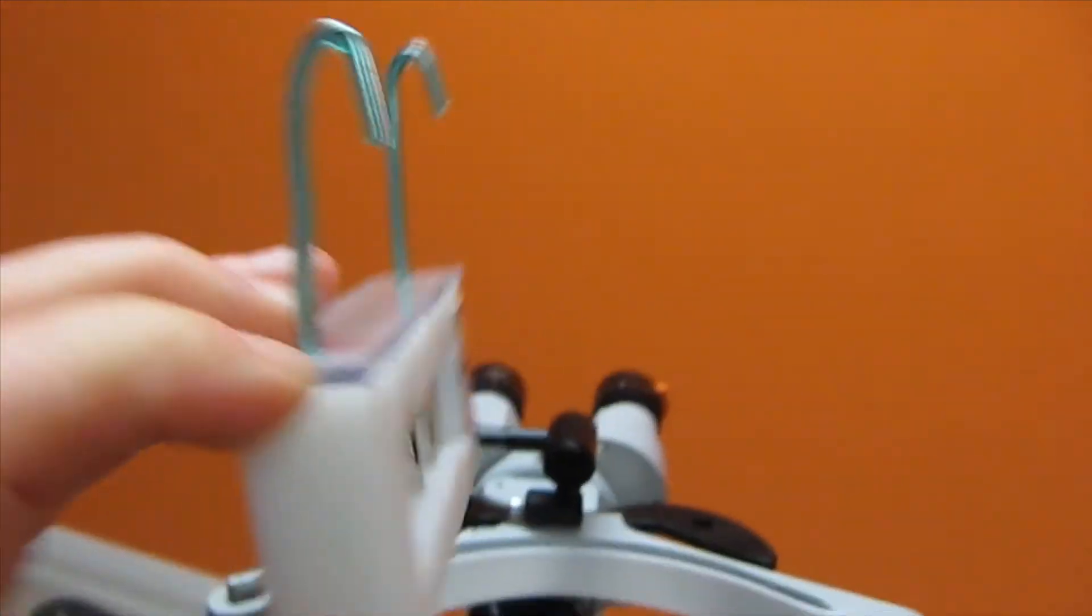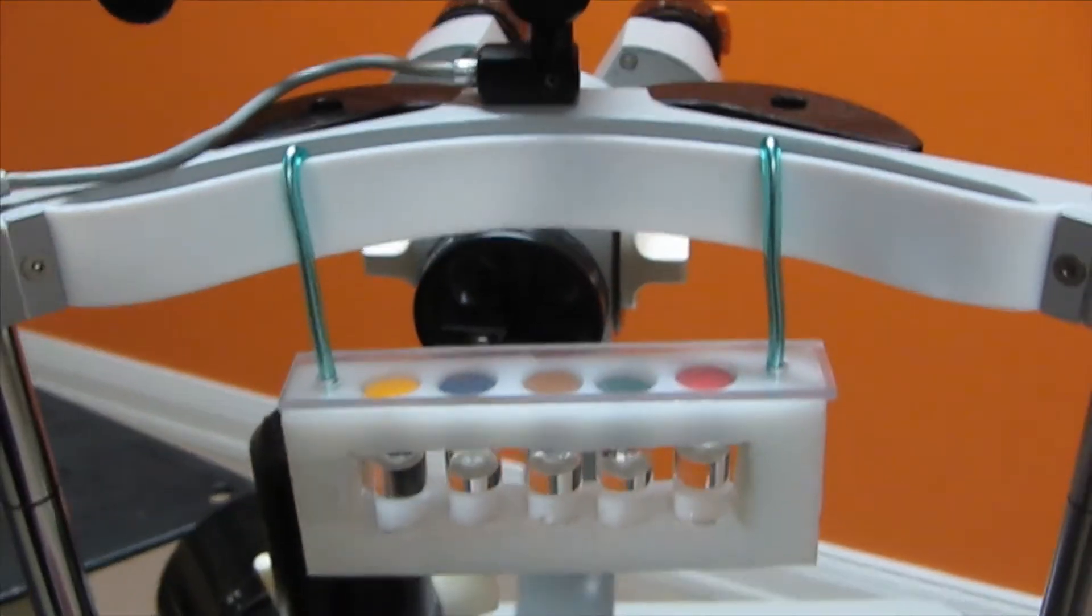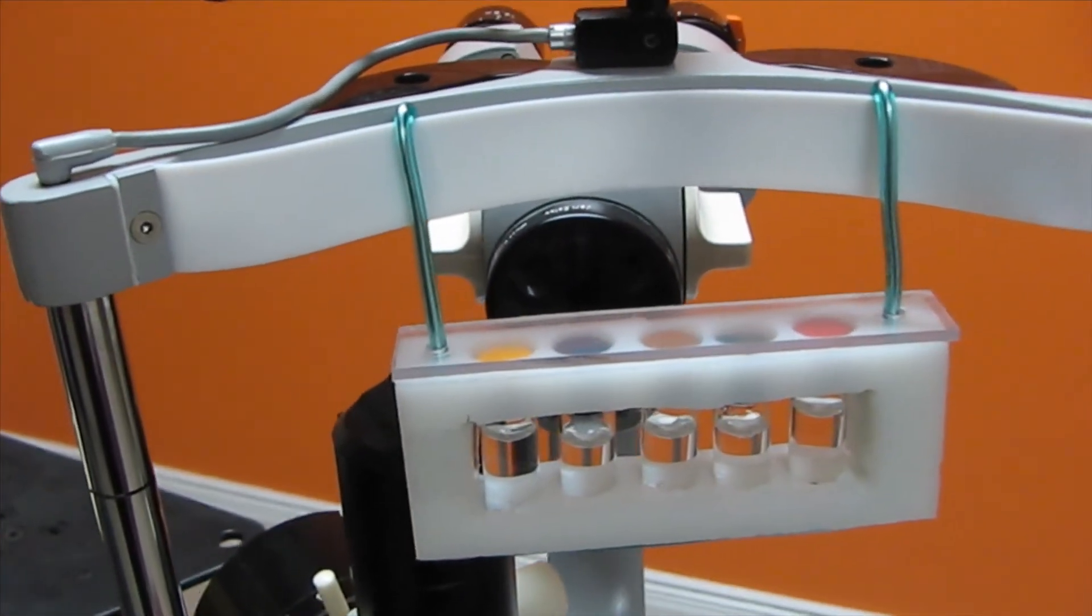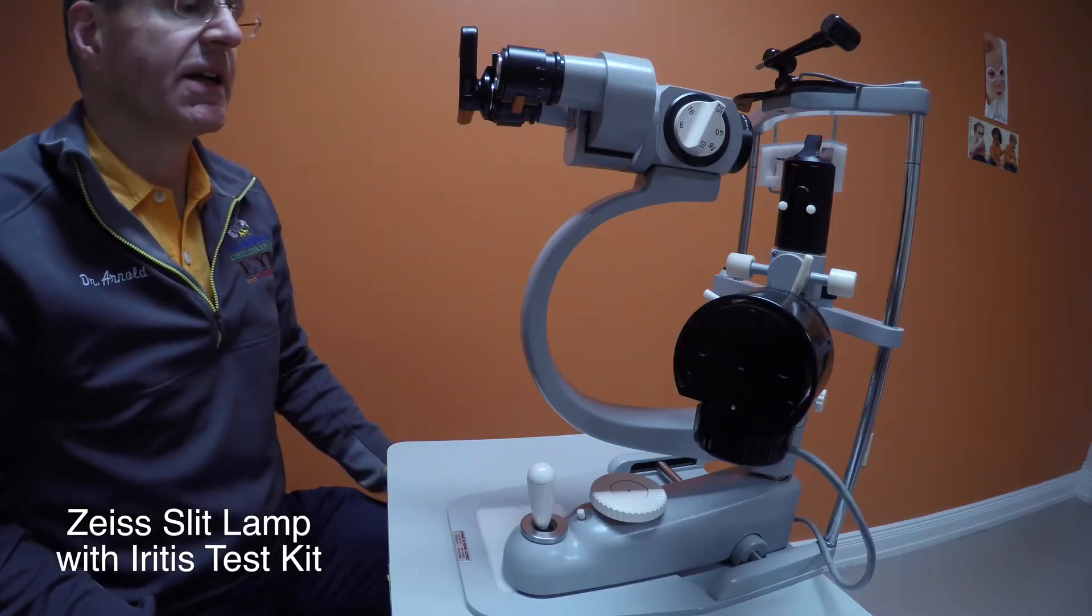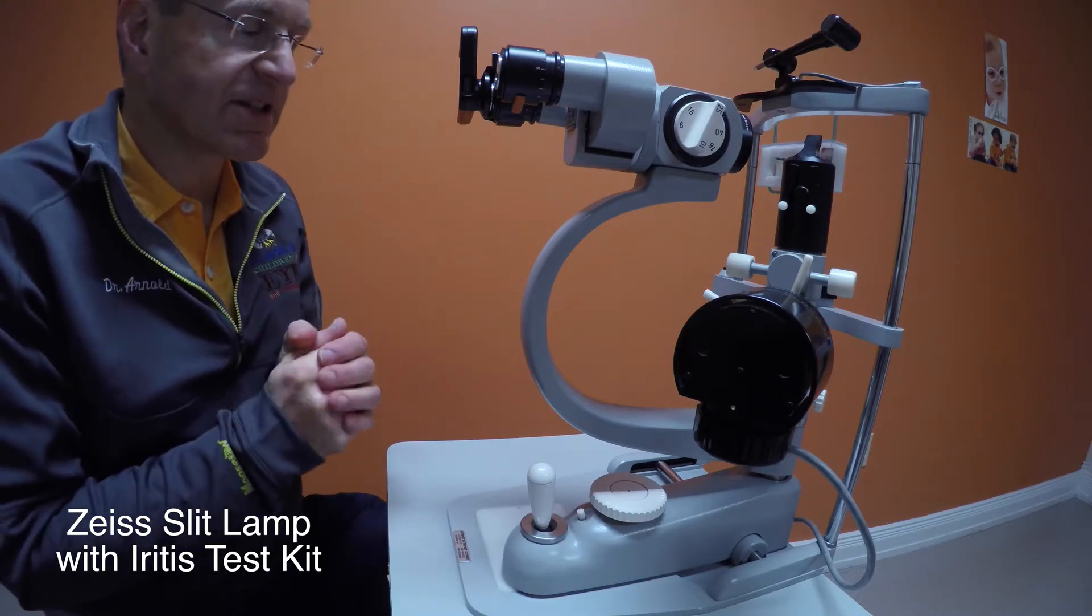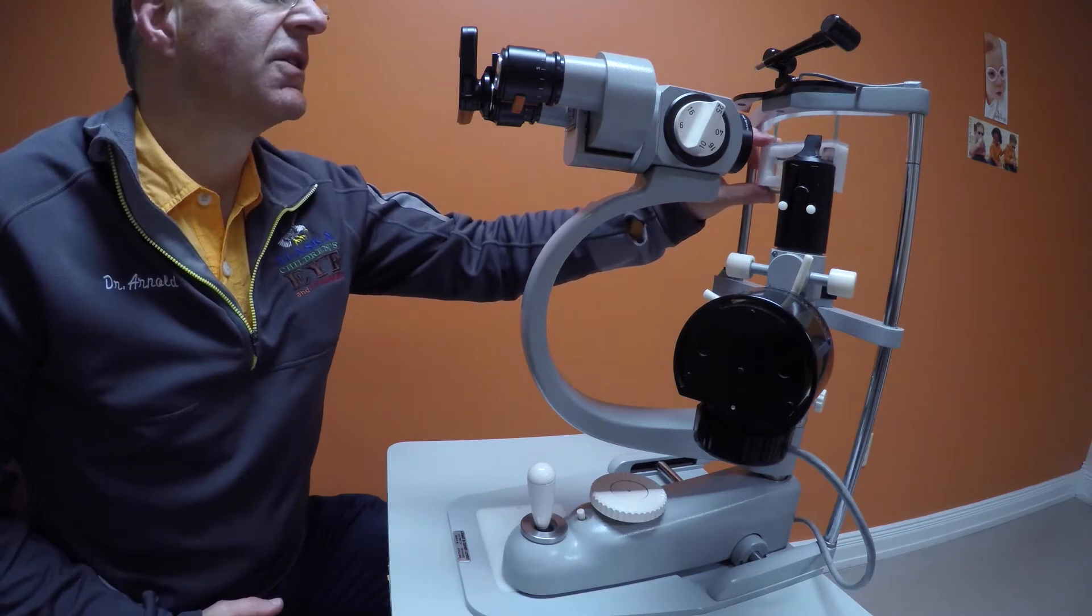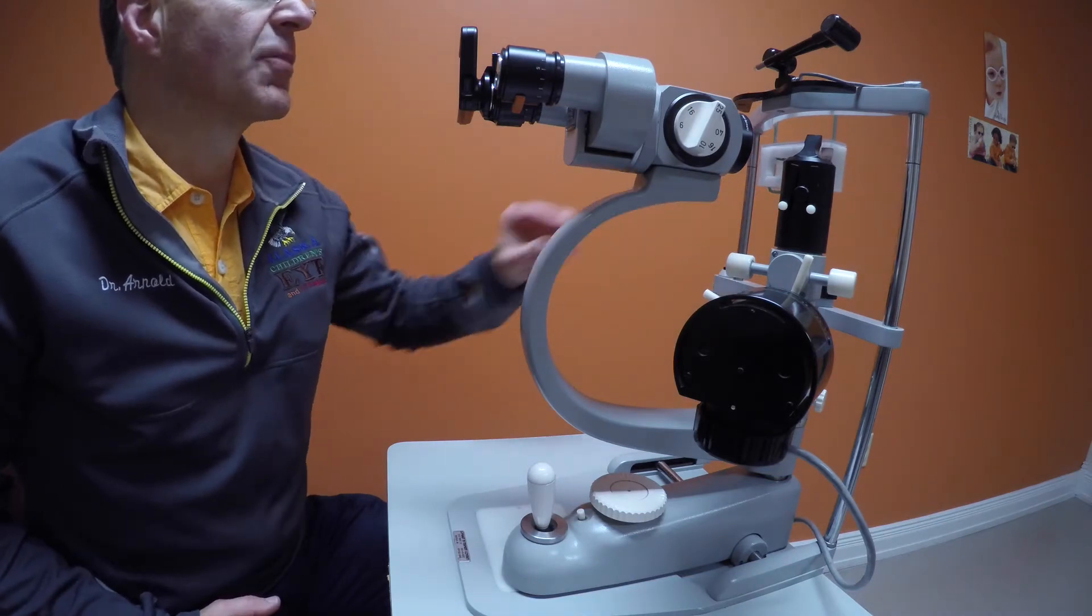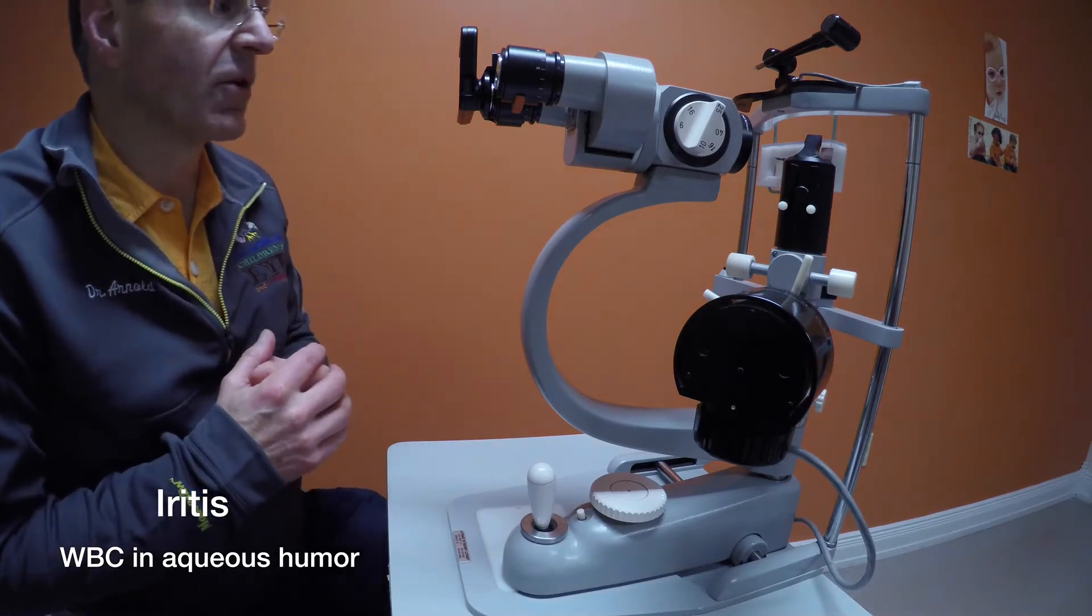The iritis test kit can easily be placed in the forehead mount. We're going to be demonstrating the Zeiss slit lamp and use of a Zeiss slit lamp with an iritis test kit to determine the presence or absence of white blood cells floating into the anterior chamber or iritis.